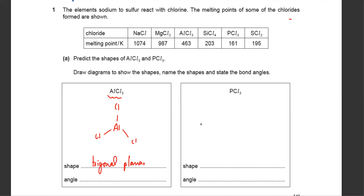Now what about PCl3? Phosphorus is in group five, which means it's making three bonds with chlorines. Since phosphorus has five electrons with three shared, there are two electrons left — so you've got one lone pair and three bonds.